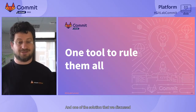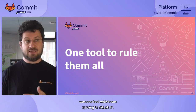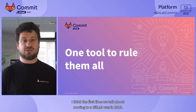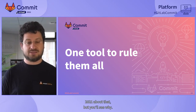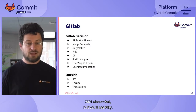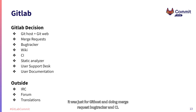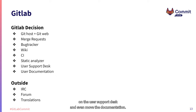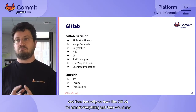So we had to change. One of the solutions we discussed was moving to GitLab as a one-tool solution. I think the first time we talked about moving to GitLab was in 2015, so it's a bit weird that we're talking in 2021 about that — but you'll see why. The decision was to move almost everything to GitLab: at the beginning just for Git hosting, merge requests, bug tracker, and CI. Then we decided to also move the wiki, work on the static analyzer, user support desk, and even move the documentation.